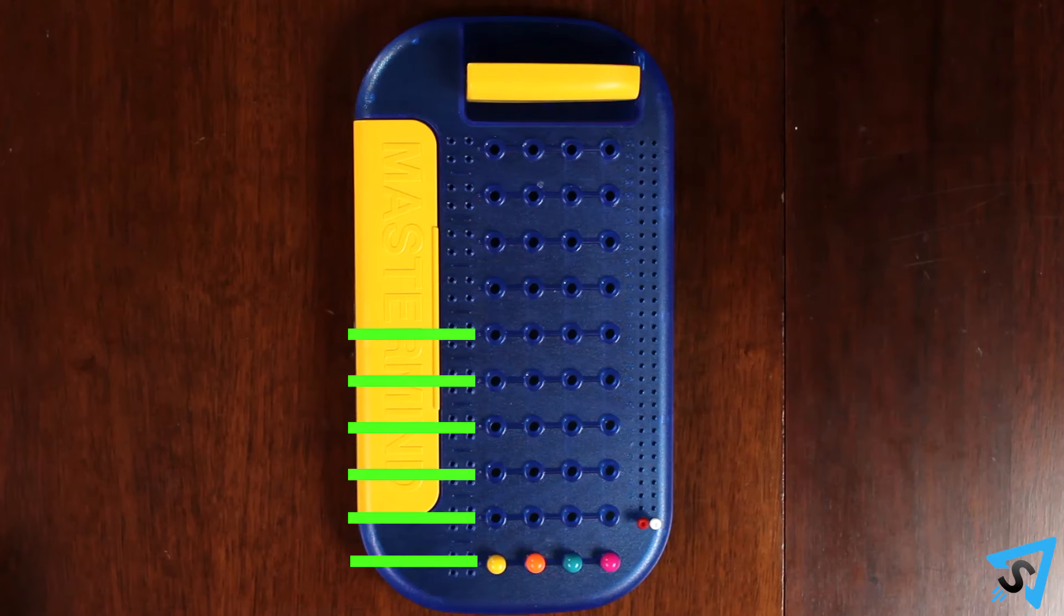Count up how many rows it took for the code breaker to solve the code. The code maker receives that many points and moves the score peg marking them up.